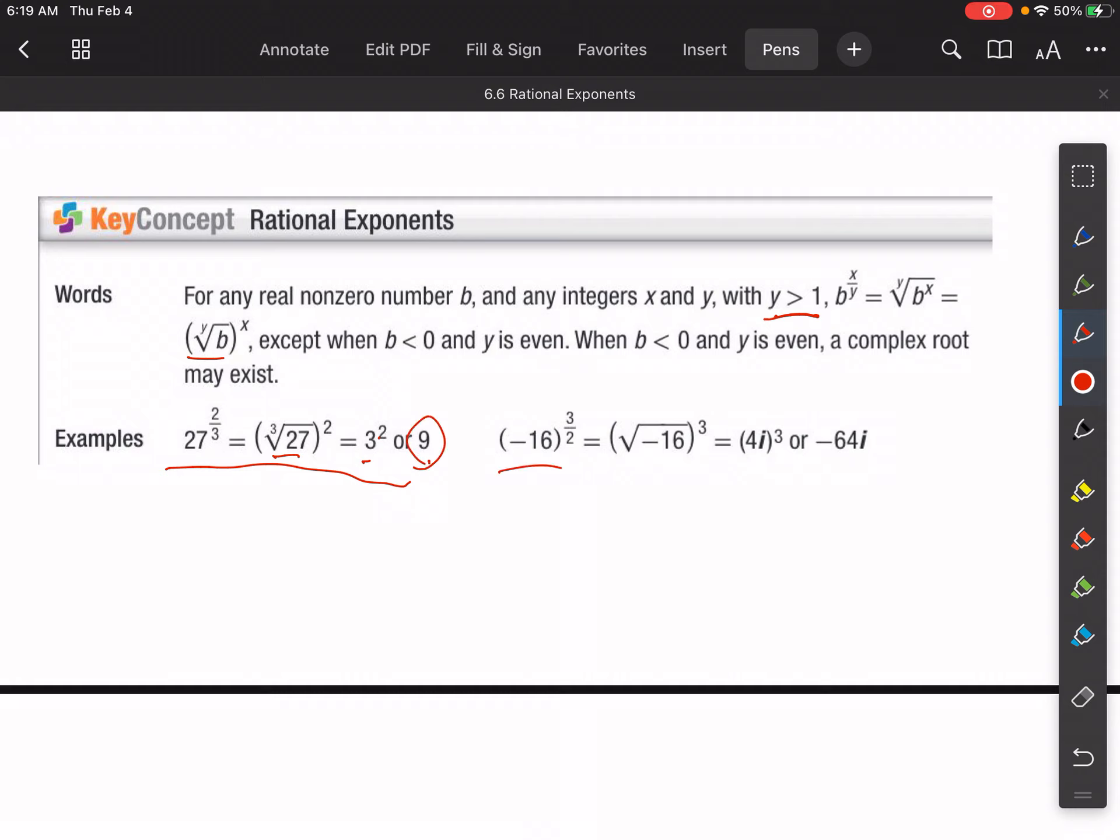Here we have the same kind of deal. This is the same thing as the second root of negative 16 to the third power. Second root of negative 16 is 4i. 4i to the third power is negative 64i.